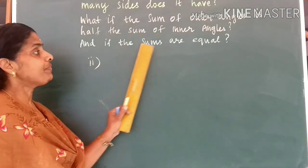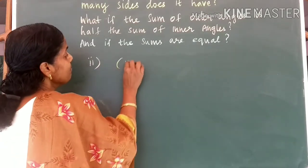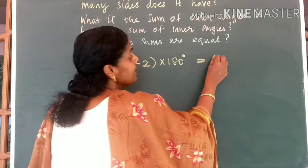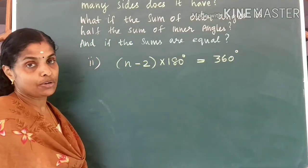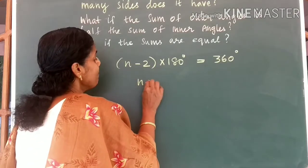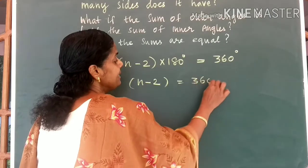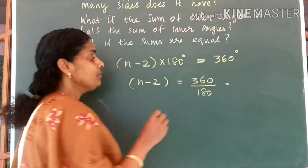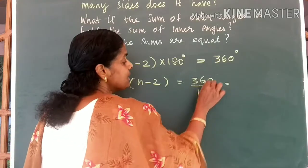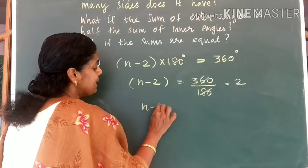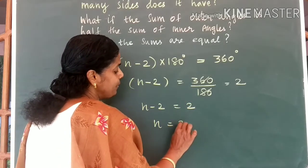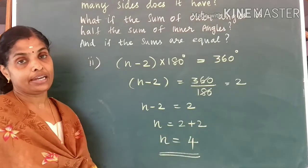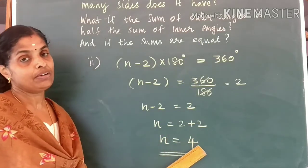Third part of the question: if the sums are equal. The sum of inner angles of a polygon is (n minus 2) into 180 degrees, and 360 is the sum of outer angles. Setting them equal: (n minus 2) into 180 is equal to 360. Taking 180 to the other side gives 360 divided by 180, which is 2. So n minus 2 is equal to 2, that is n is equal to 2 plus 2, which is equal to 4. So if the inner angles and outer angles sums are equal, the number of sides of that polygon is equal to 4.